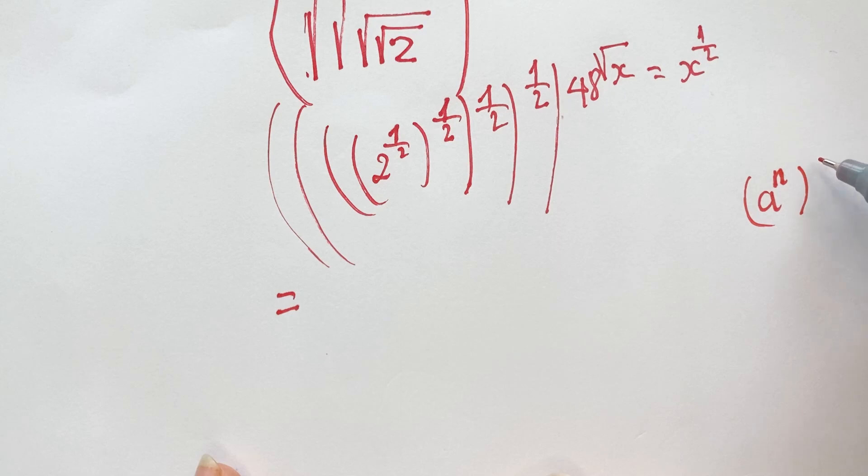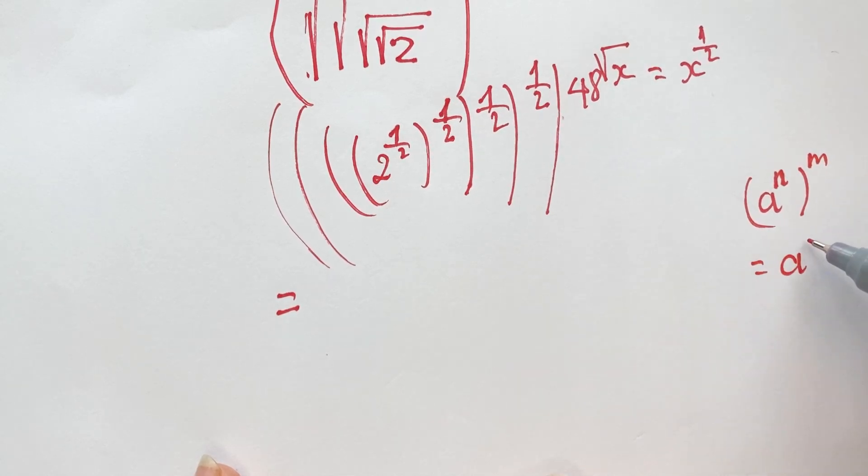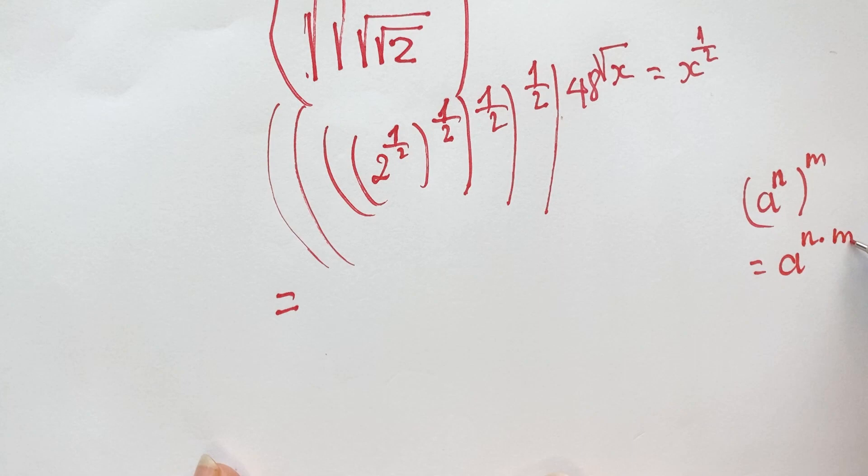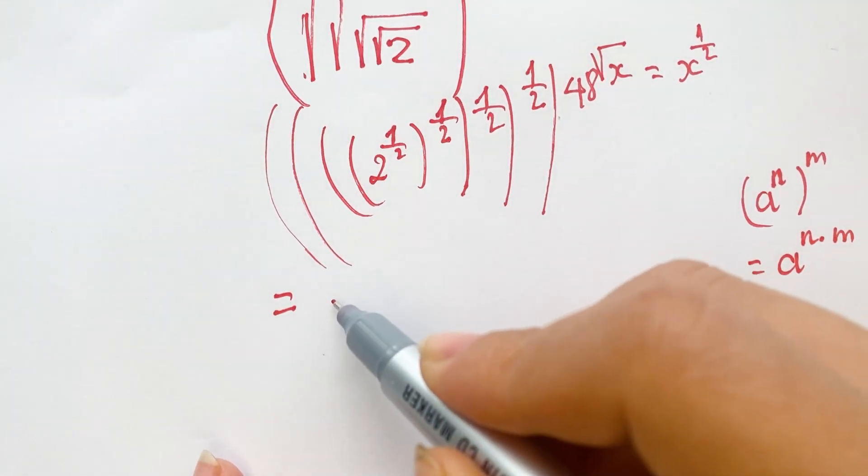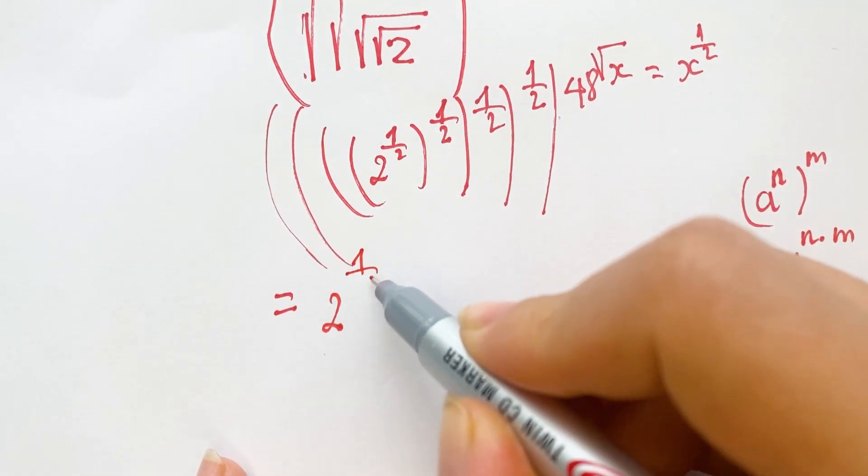Therefore we can rewrite two to the power of one-half and multiply all the exponents together.